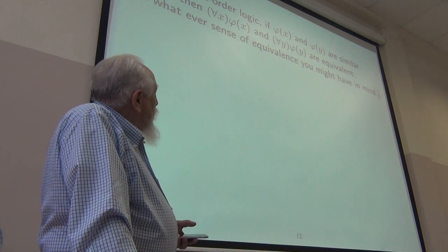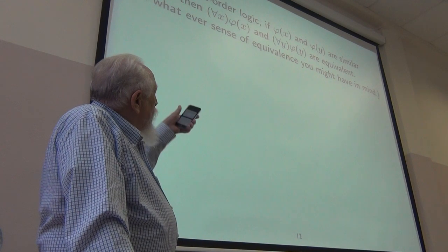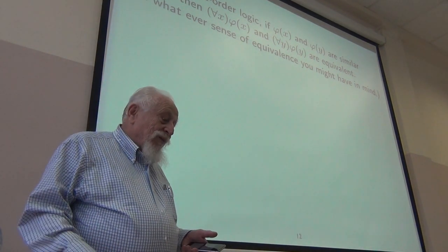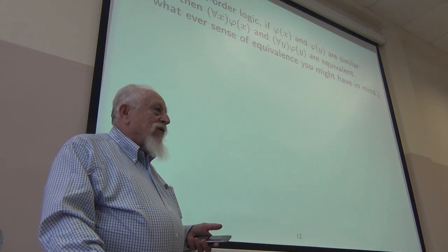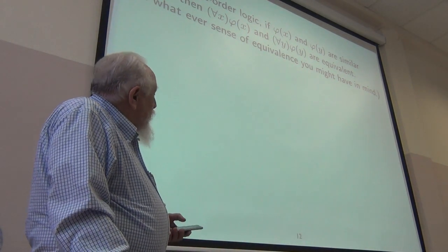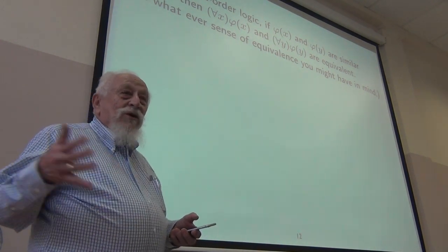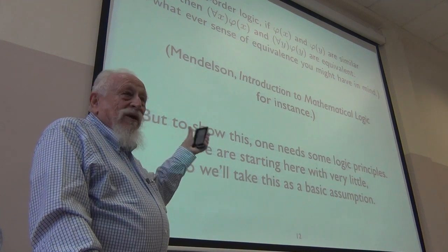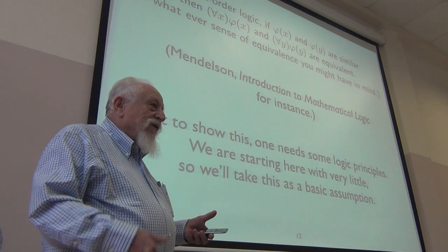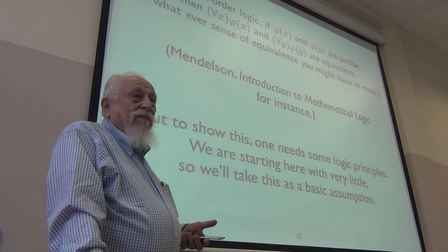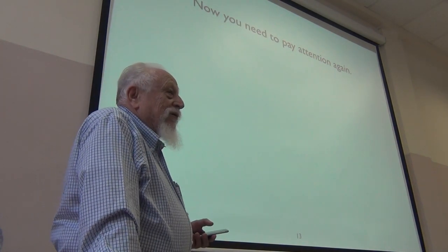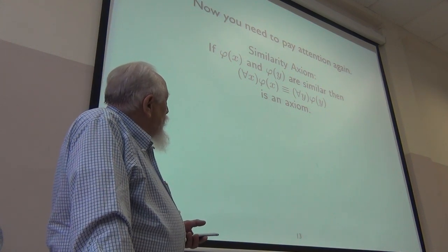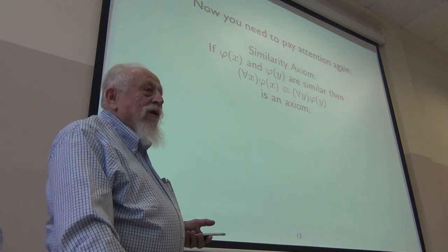In any standard treatment of first order classical logic, the phi of x and phi of y are similar. For all x phi of x and for all y phi of y can be proved equivalent if you're in an axiom system, can be deduced equivalent if you're using a sequent calculus, have the same truth value if you're working semantically. So, whatever you're working in, these won't work out the same. But the thing is, I'm going to be working with very weak systems. And you don't have the machinery to prove that equivalence. So, what I'm going to do is take similar formulas behave equivalently as one of our basic axioms.